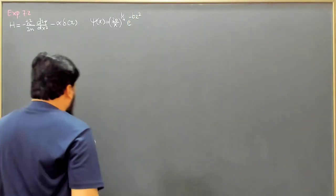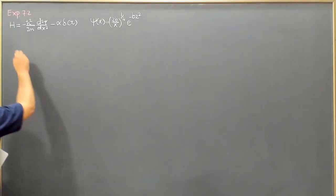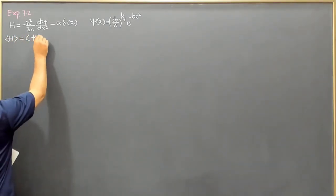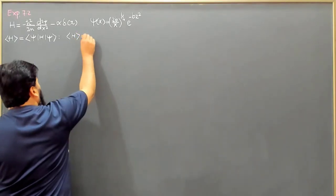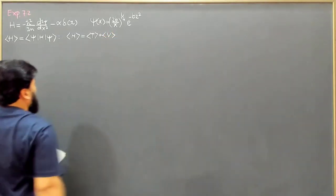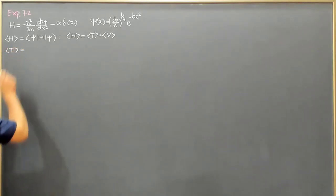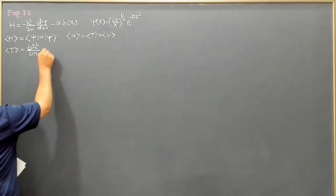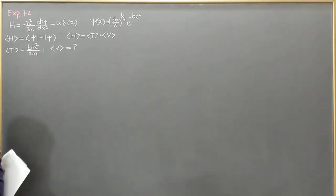It is the same Gaussian function which we will utilize as a trial function. We know the expectation value of H is the sum of the kinetic and potential energy portions. We have already calculated from our previous example that T comes out to be b·h-bar²/2m, but our potential has changed — it is now a delta function potential, not a harmonic oscillator.